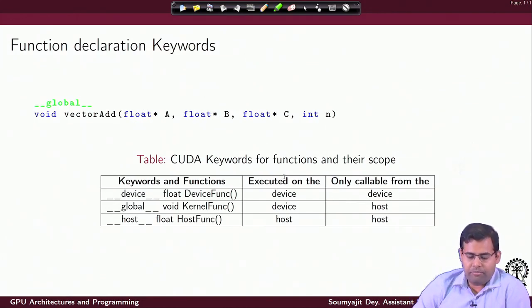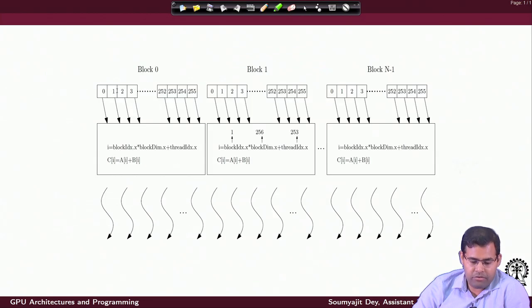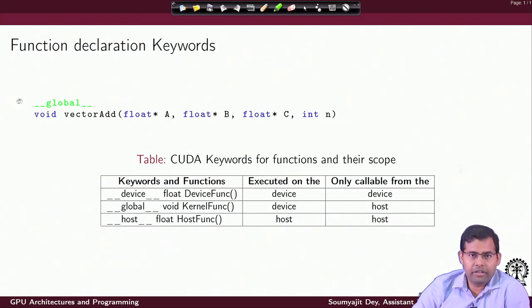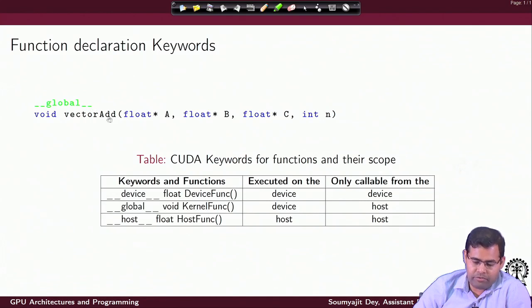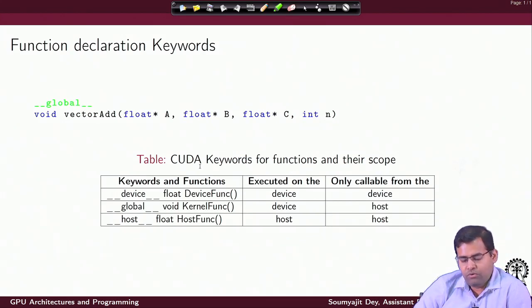Following this, we have a discussion on the different keywords used for declaring CUDA functions. For the vector add kernel, we used the keyword global highlighted in the code — it is followed by a standard function definition with return type void, since these are kernel functions that execute on the GPU device. They take device memory pointers as parameters, and the keyword global indicates the nature and scope of this function.